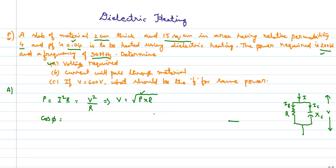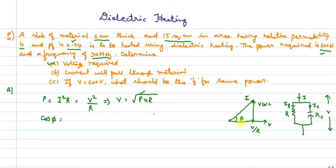Drawing the phasor diagram: voltage is the reference. The current through resistance Iᵣ = V/R is in phase with voltage. The current through the capacitor Ic = V·ω·C is 90 degrees ahead of the resistive current. The total current I makes an angle φ with voltage — this is the power factor angle. So cos φ = (V/R) / I, which is adjacent over hypotenuse.